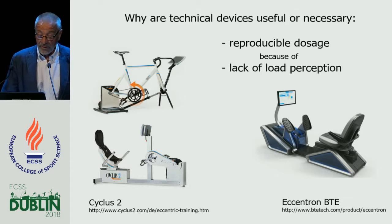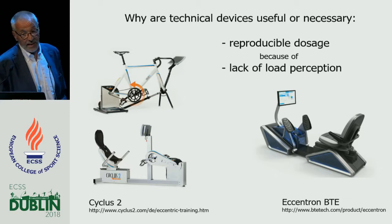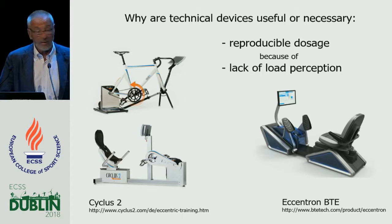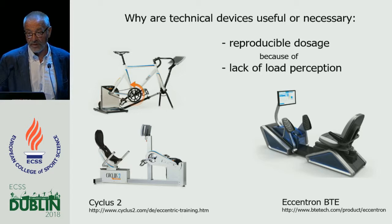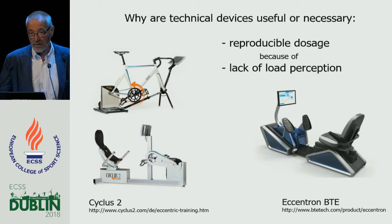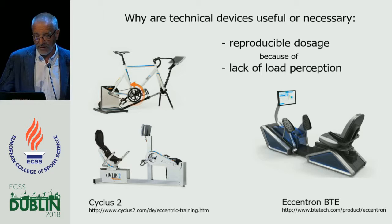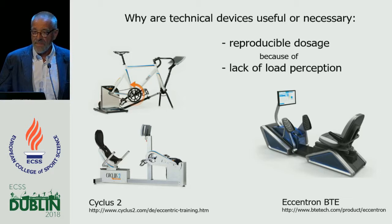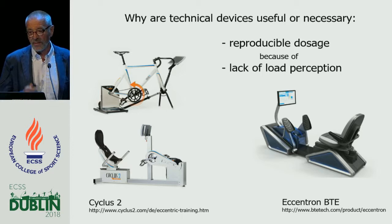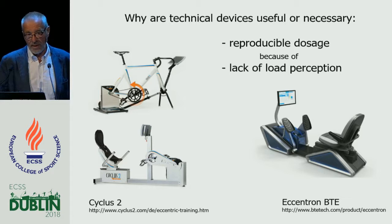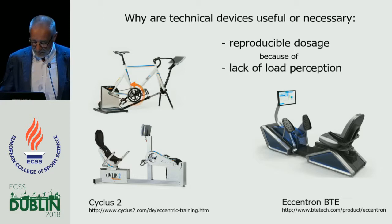Why use technical devices? You have to be able to reproduce the dosage, because there is a complete lack of load perception with eccentric exercise. I can put you on an eccentric ergometer, load you with 100 watts — which you don't really perceive, because that's only equivalent to 25 watts concentric — and let you work for 10 minutes. The next day, you will have massive muscle damage and will probably walk down the stairs backwards. So you need to be able to dose it, because the patient doesn't feel the load being applied or whether they will have muscle soreness the next day.